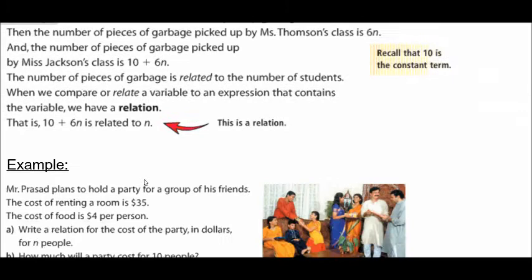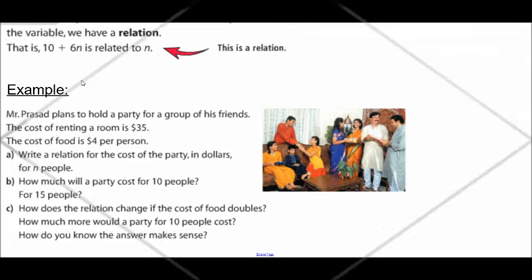We have an example here, and I'm going to head on over to the whiteboard to go over it with you. Mr. Prasad plans to host a party for a group of his friends. The cost of renting a room is $35. The cost of food is $4 per person. This example is done in your notes, but I want to do it step by step with you here in the video.